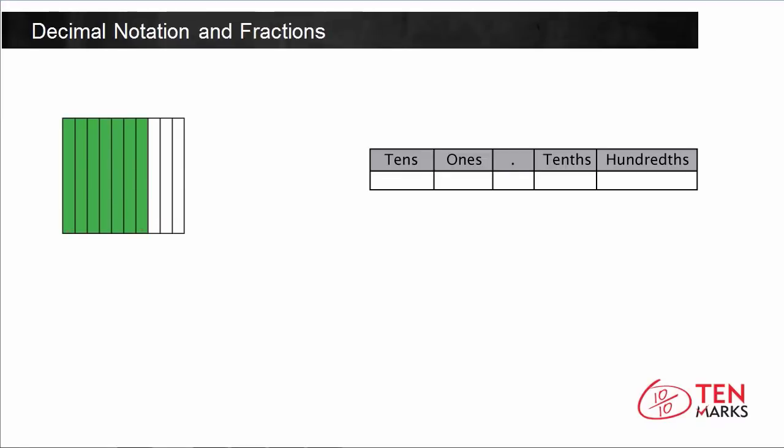Since the tenths grid has ten equal parts, you can count the number of shaded parts to find the fraction out of ten. The denominator is going to be ten because there are ten total parts. If you count, seven of those ten total parts are filled in green, so the fraction here is seven tenths.